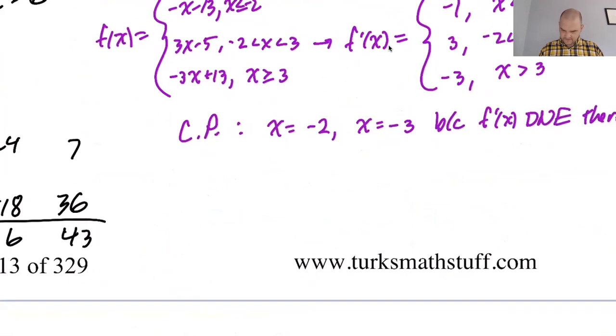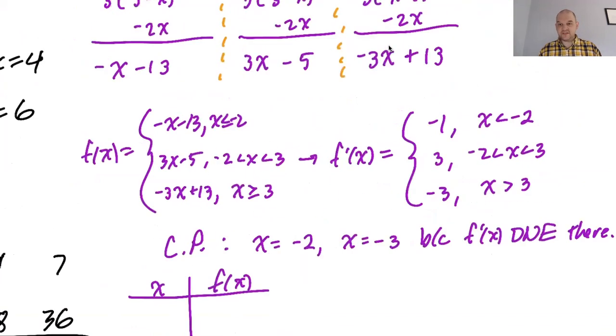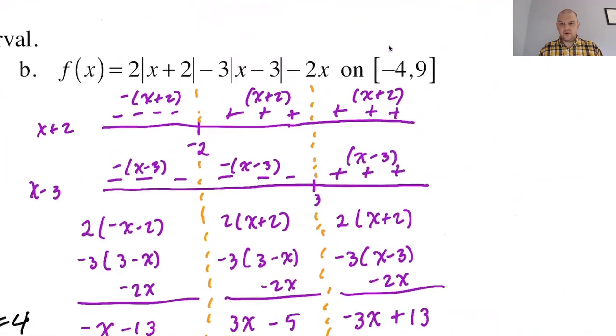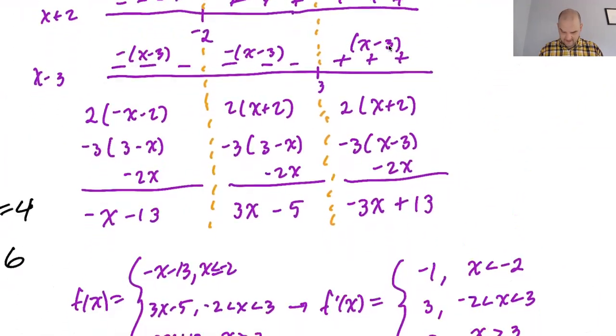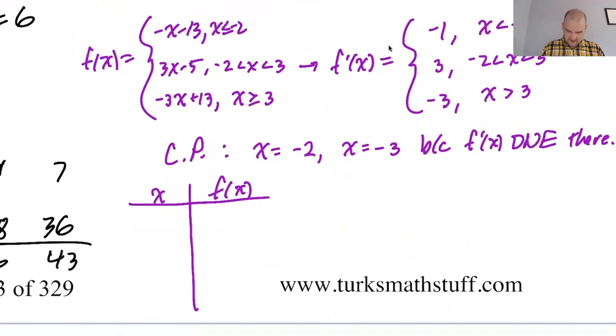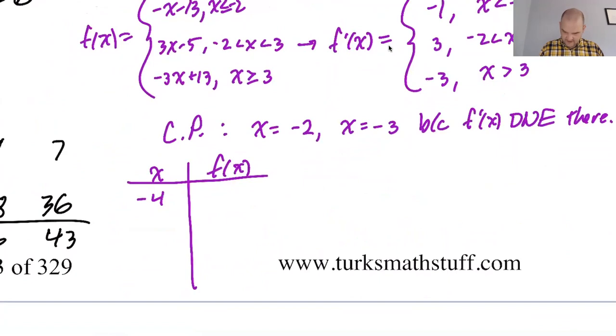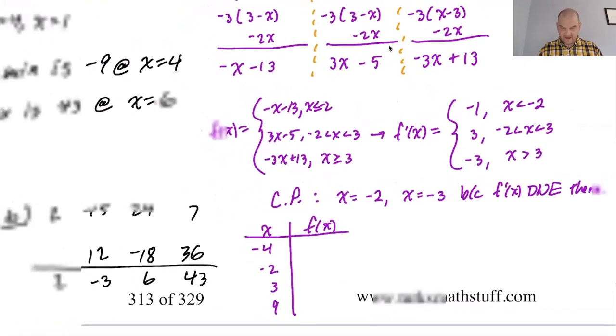Let's do the table. So we have to consider the endpoints, which are negative 4 and 9. So negative 4, and then we got negative 2, 3, and 9. Then we need to fill in the values of the function.